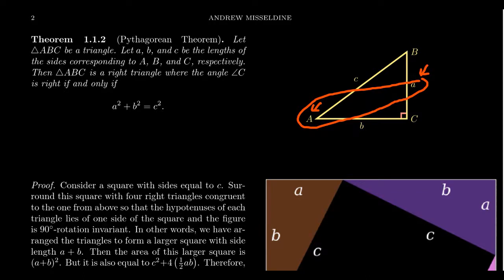We often use a capital letter to describe the vertex of the triangle, and a lowercase letter to represent the measure of the side opposite it. So there's a capital A for vertex A, and a lowercase a that measures the length of the side opposite vertex A. That convention applies to triangles in general, not just right triangles.